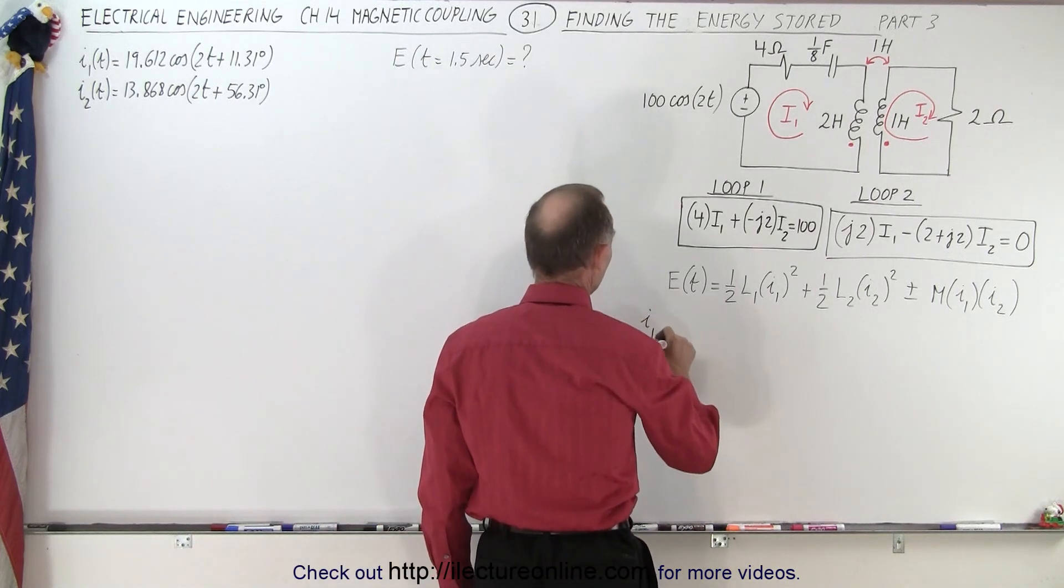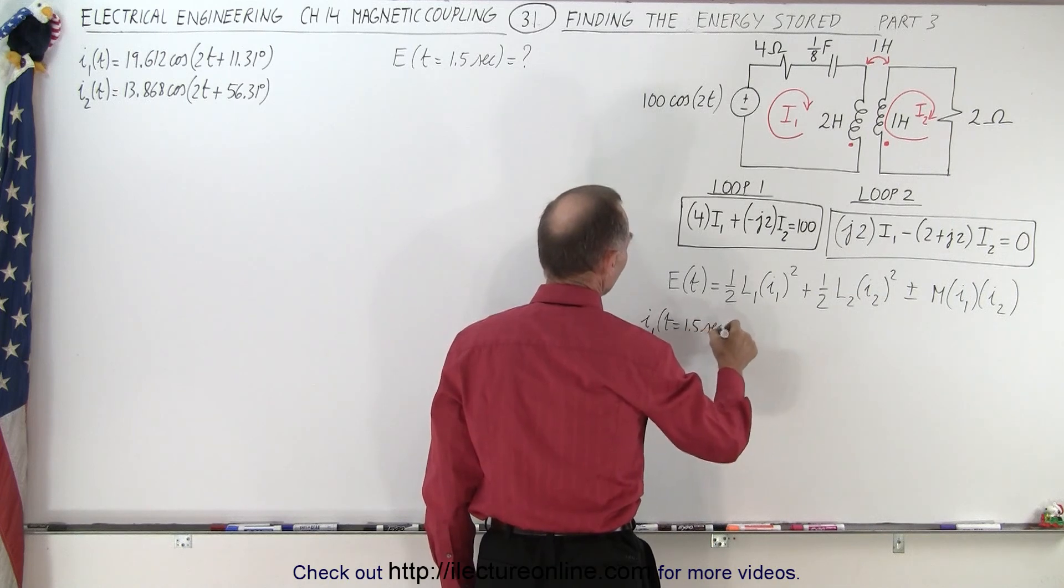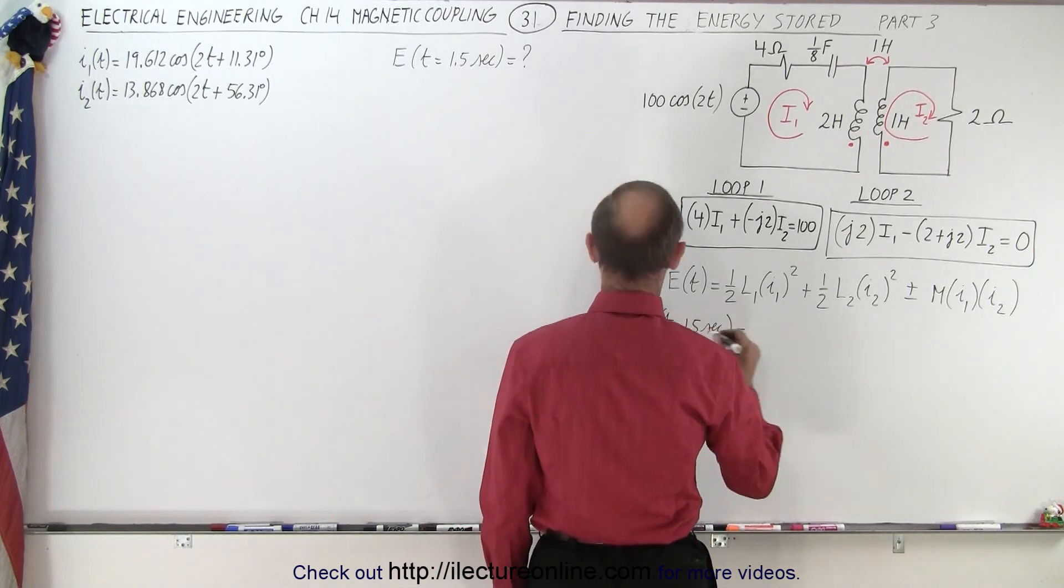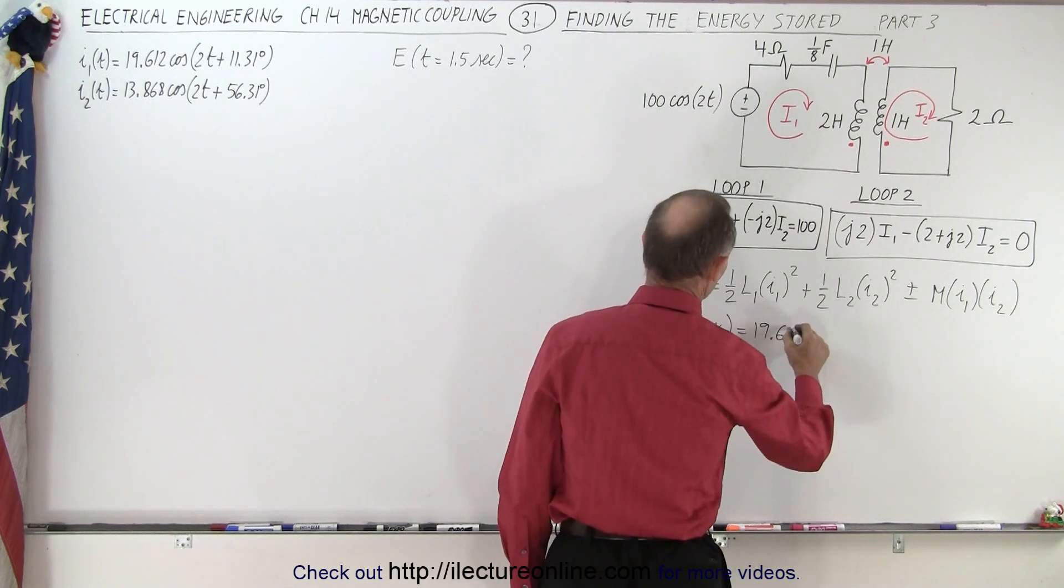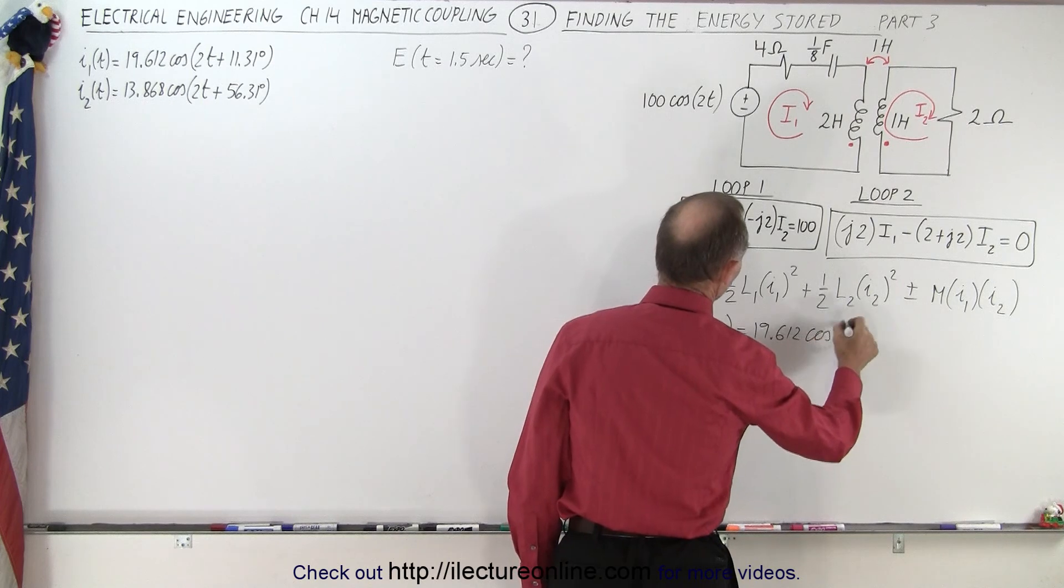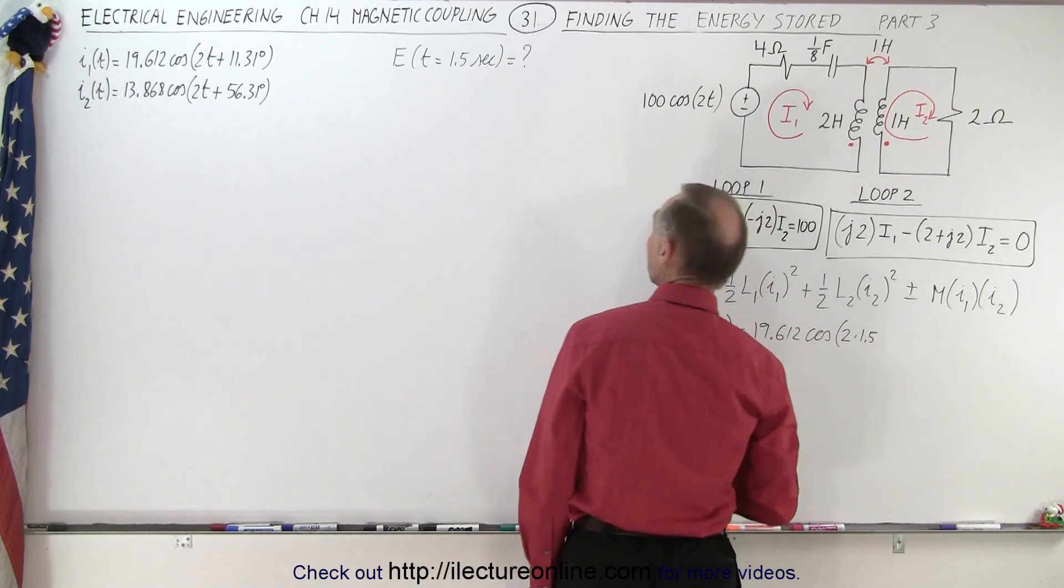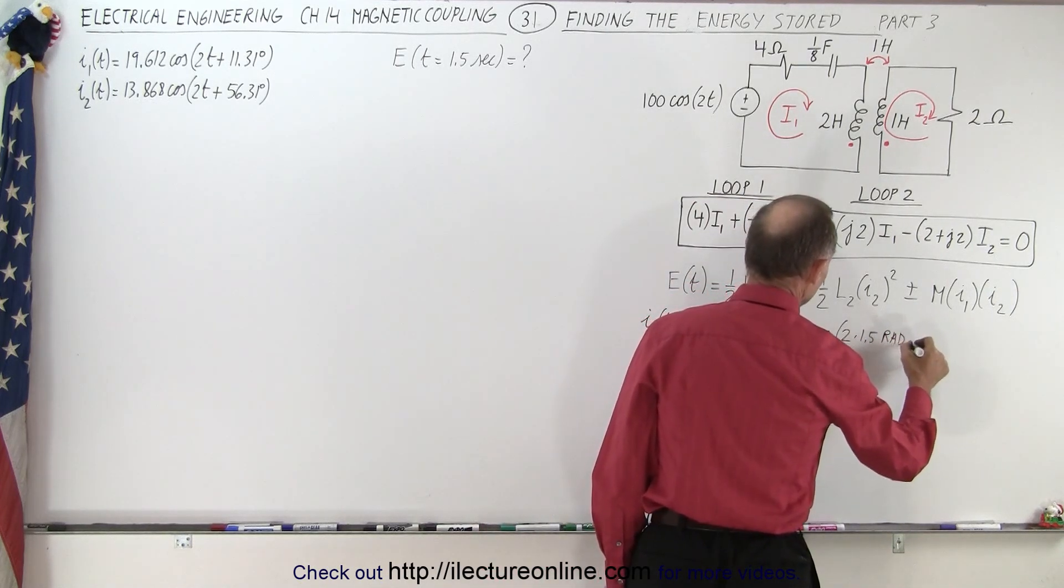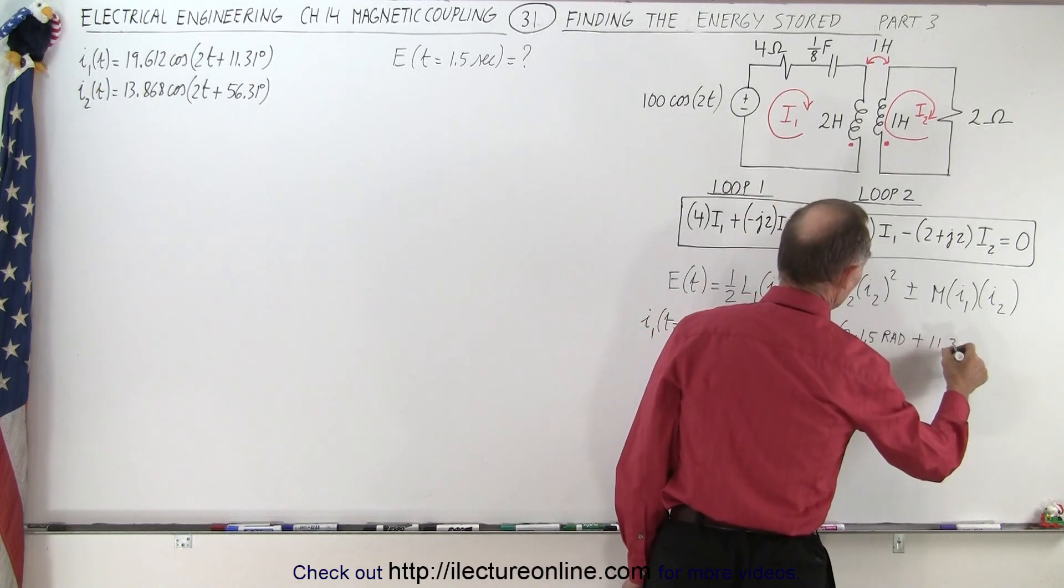So we have I1 when time equals 1.5 seconds is equal to 19.612 times the cosine of 2 times 1.5, that's in radians, so we want to make sure that we don't mess that up, radians, plus a phase angle of plus 11.31 degrees.